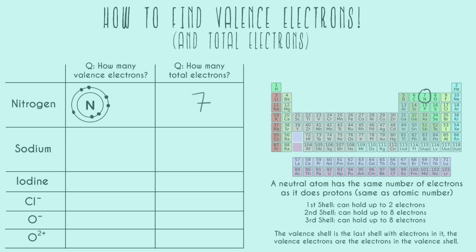In our nitrogen example, the last shell with any electrons in it is the second one — so that is our valence shell. The valence electrons are all the electrons in that valence shell, and we can count and see that it's one, two, three, four, five. So nitrogen has five valence electrons.